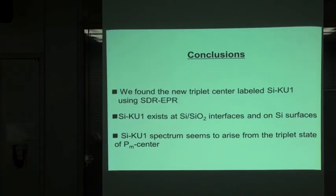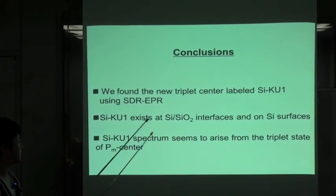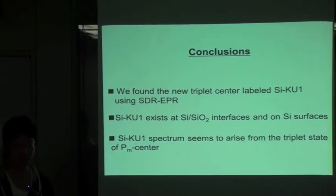Conclusion. We found the new triplet center labeled SI-KU1 using the SDR-EPR method. Second, SI-KU1 exists at the Si-SiO2 interface and the silicon surface. Third, the SI-KU1 spectrum seems to arise from the triplet state of PM center. Thank you for your attention.